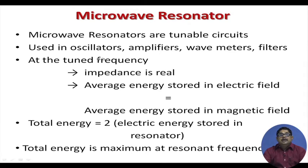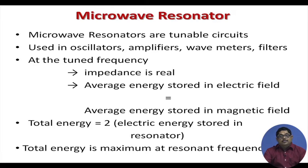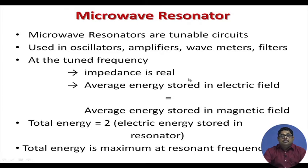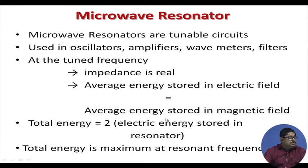That is the principle of the wave meter. For any filter where you want to amplify a certain signal or reject another, you can use LC devices — there are various types: low pass, high pass, and others. They require LC elements; at the tuned frequency we know that impedance is real, the reactance part goes away. Impedance, which is the sum of resistance and reactance, has its reactance go away at the tuned frequency — that is the definition of resonance. At that time, average energy stored in the electric field becomes equal to average energy stored in the magnetic field. Total energy is twice the electric energy stored, and is maximum at the resonant frequency.